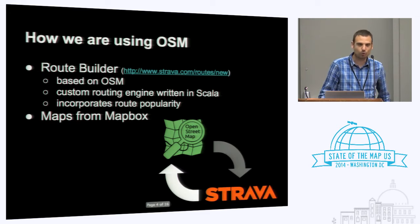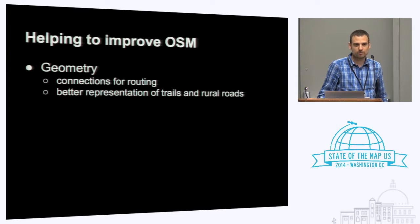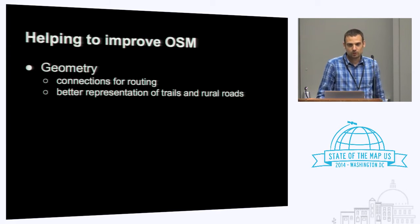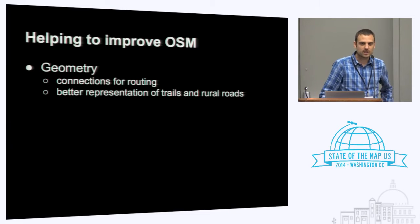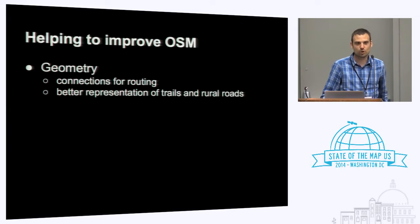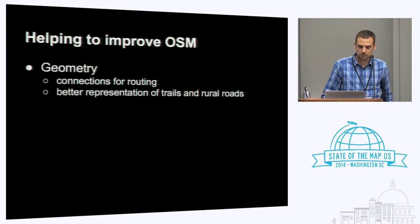But this talk is really about what we're doing to complete the loop and give back to the community — we want to help make the map better. Making the map better means a lot of different things to a lot of different people. For us, it's mostly just about geometry: most specifically connections for routing, and then better representation of roads and trails. A lot of our users just can't route on trails because they simply don't exist in OSM.